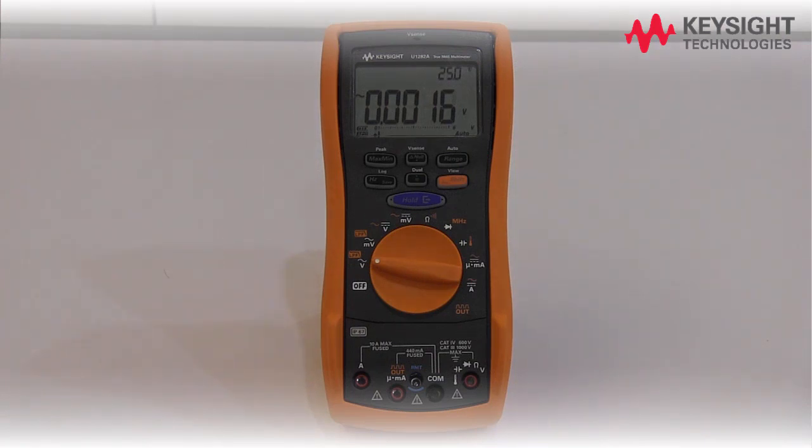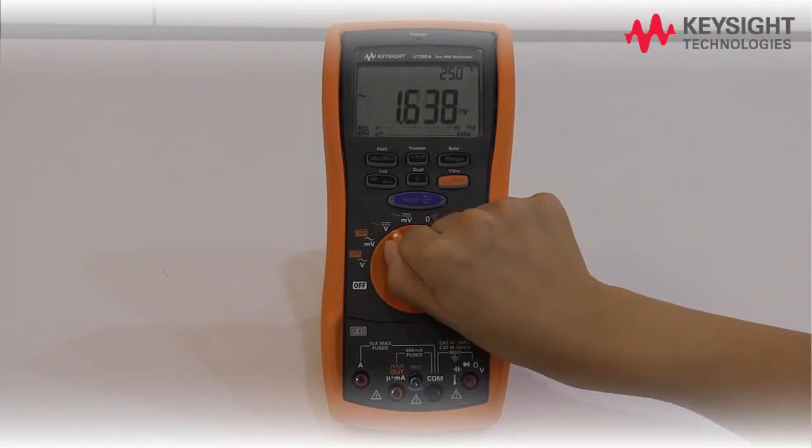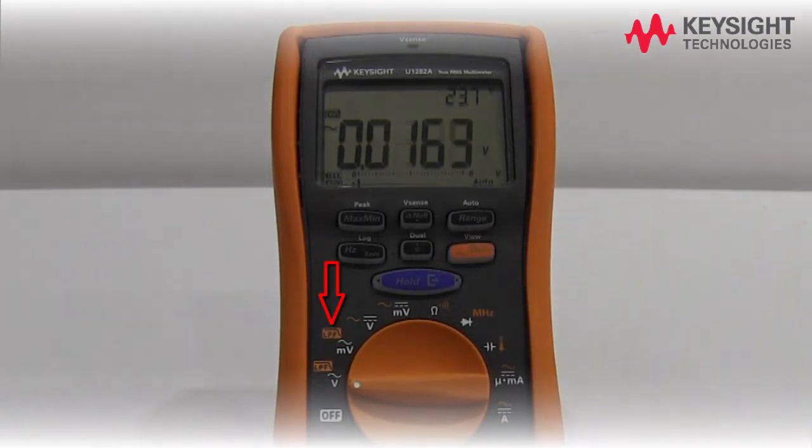To select a measurement function, switch the rotary switch accordingly. Press SHIFT to switch between the primary and shifted measurement function indicated in orange.